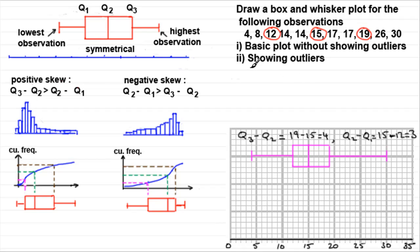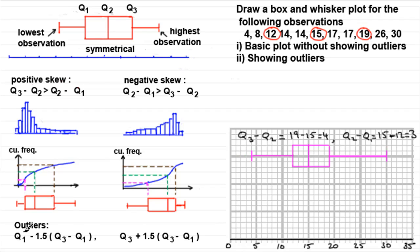For part 2 we draw a box and whisker plot showing outliers. Outliers are extreme values out towards the ends of the distribution. They're defined as values that are 1.5 times the interquartile range above the upper quartile or below the lower quartile. The lower outlier boundary is Q1 minus 1.5 times (Q3 minus Q1), and the upper outlier boundary is Q3 plus 1.5 times (Q3 minus Q1).